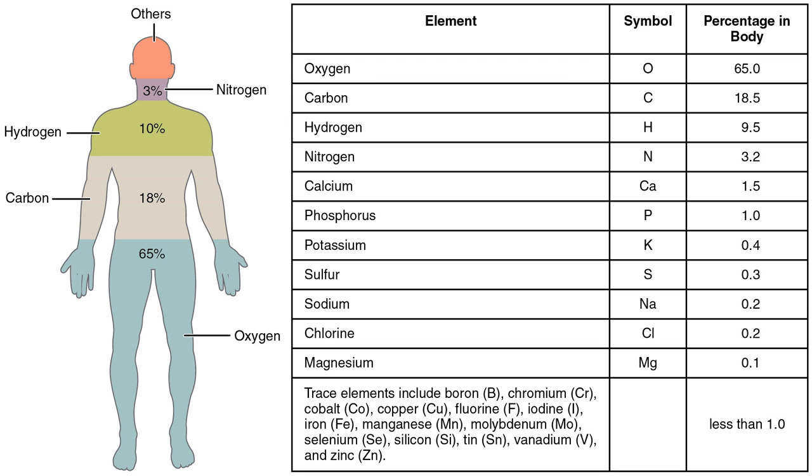Body composition can also be expressed in terms of various types of material, such as muscle, fat, bone and teeth, nervous tissue, hormones, connective tissue, body fluids, contents of digestive tract including intestinal gas, air and lungs, epithelium.